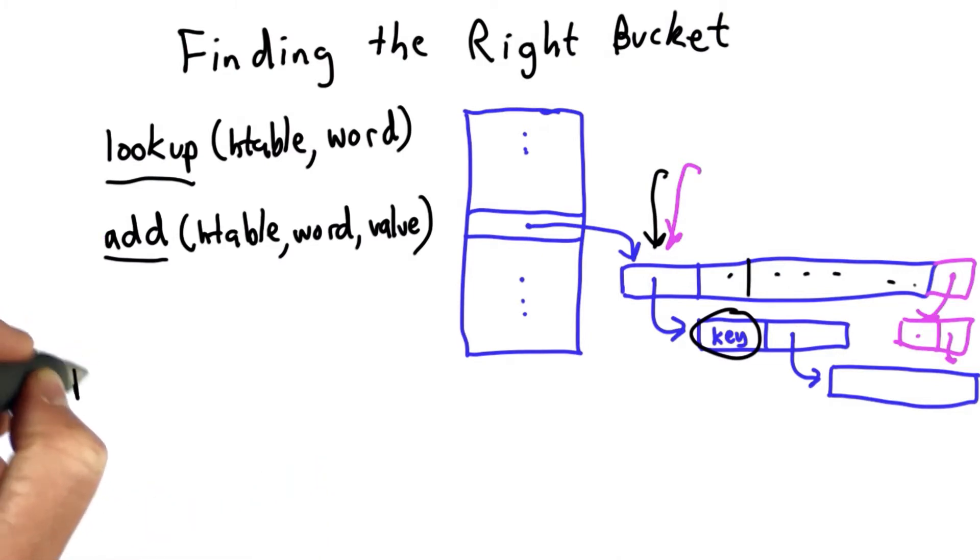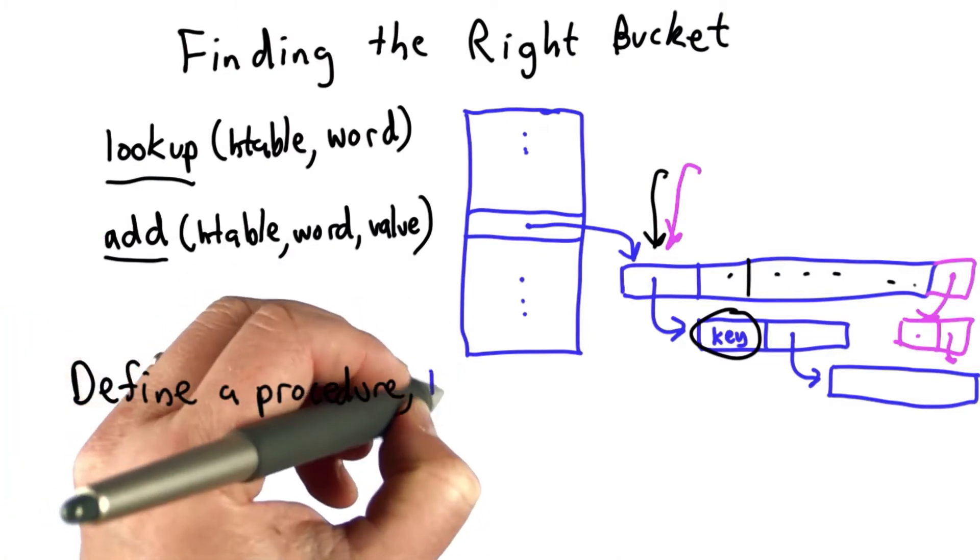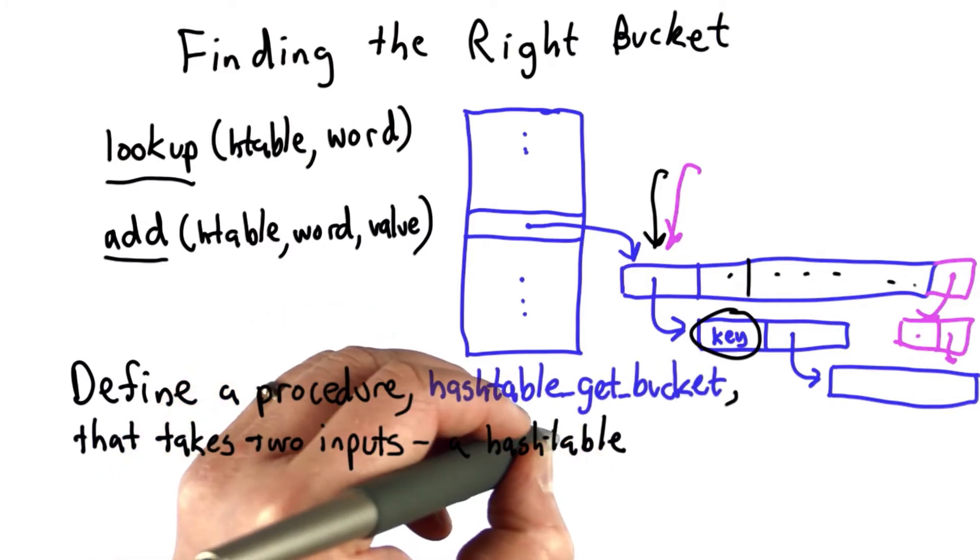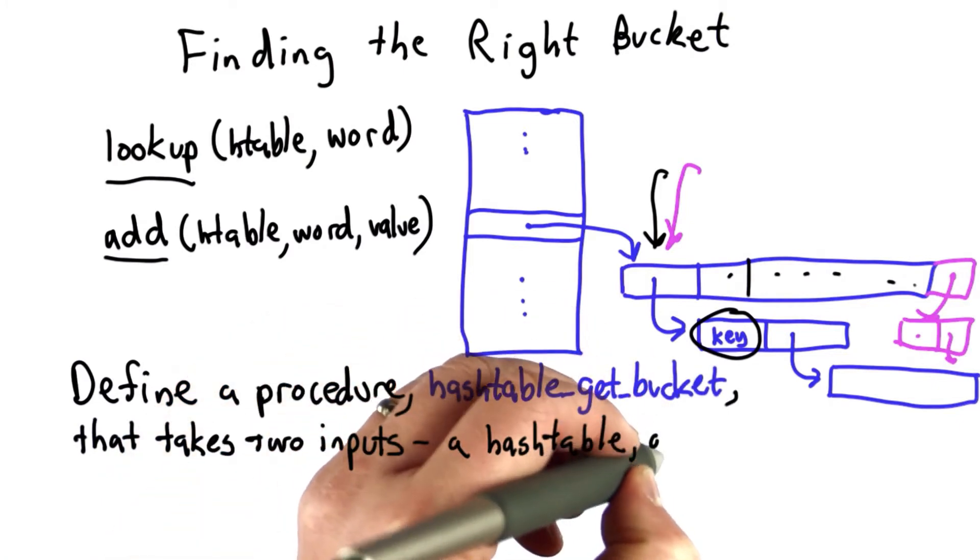Our goal is to define a procedure called hash_table_get_bucket that takes two inputs: a hash table and a keyword.